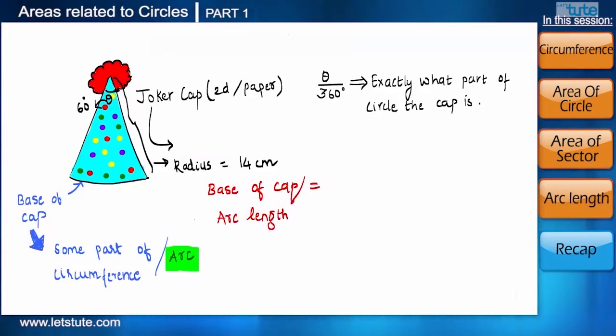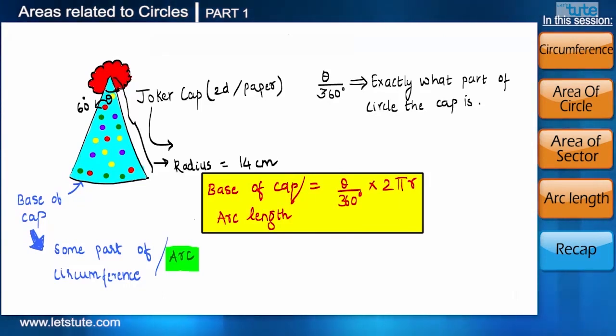And now we will try to find the value of the base or arc length. From our previous formula we know that θ/360 will give us exactly what part of circumference the base is. And then when we multiply it with the length of circumference that is 2πr. This way we can find out the base of the cap as we know that central angle is 60 degrees and radius is 14 centimeter. And so the arc length or base of the cap comes to 14.67 centimeters.